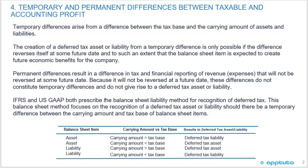Temporary differences arise from a difference between the tax base and the carrying amount of assets and liabilities. The creation of a deferred tax asset or liability from a temporary difference is only possible if the difference reverses itself at some future date and to such an extent that the balance sheet item is expected to create future economic benefits for the company.